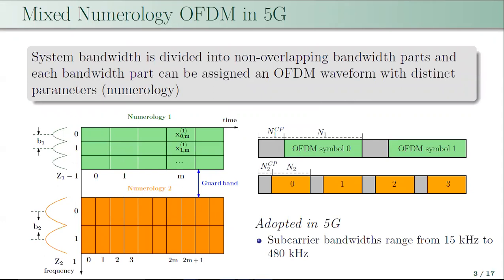Mixed numerology has been adopted in 5G to enhance flexibility and provide services to users with diverse requirements on the same carrier. In a mixed numerology OFDM system, the entire system bandwidth is divided into non-overlapping bandwidth parts, and each bandwidth part can be assigned an OFDM waveform with distinct parameters — subcarrier spacing and cyclic prefix length — which together constitute a numerology.